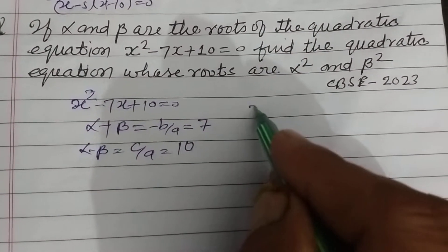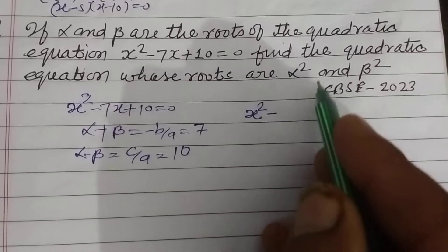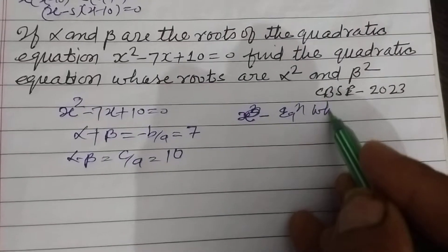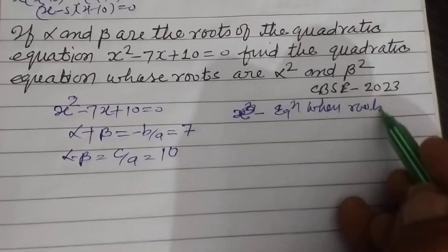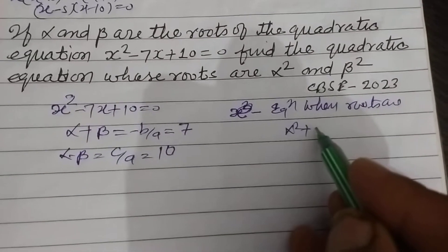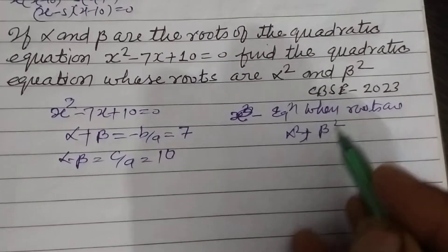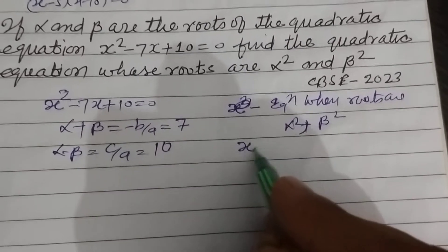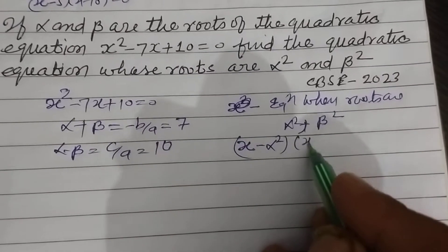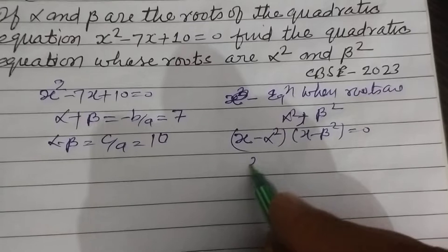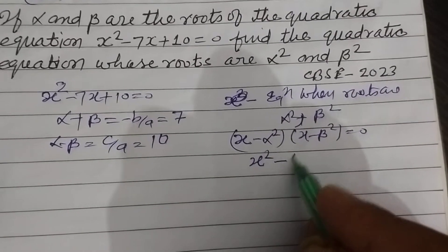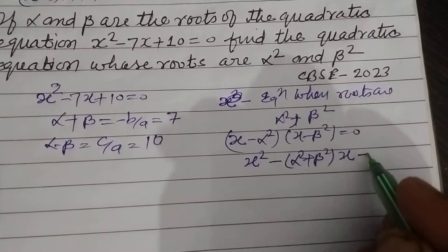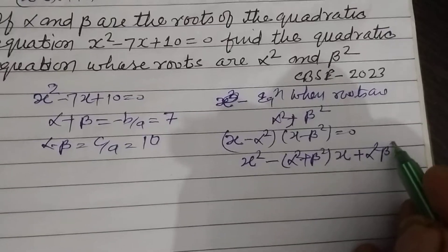The equation when roots are α² and β² is (x - α²)(x - β²) = 0. Expanding this gives x² - (α² + β²)x + α²β² = 0.